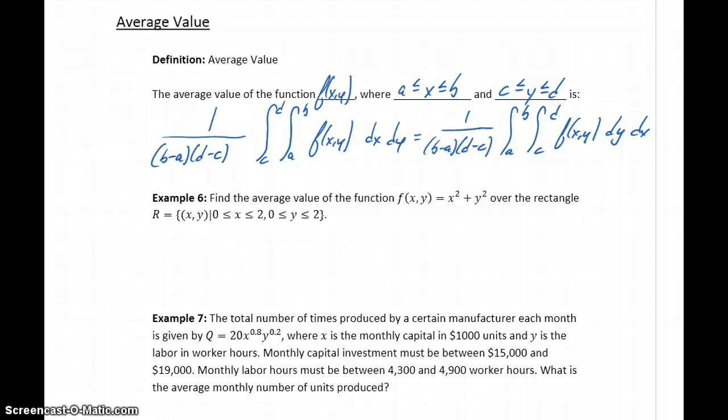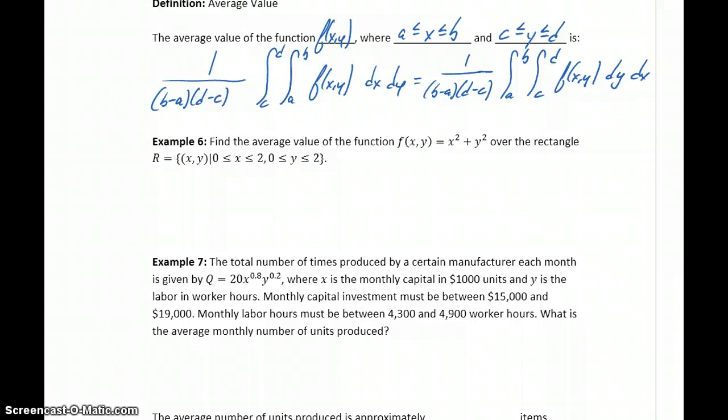In example 6, we want to find the average value of the function x²+y² over a rectangle. We're interested in the pieces of information that tell us the upper and lower bounds for x and y. So x ranges from 0 to 2, and y ranges from 0 to 2.